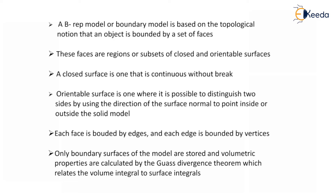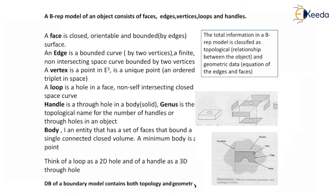Each face is bounded by edges, and each edge is bounded by vertices. Only boundary surfaces of the model are stored, and volumetric properties are calculated by the Gauss Divergence theorem, which relates the volume integral to the surface integral. A B-Rep model of an object consists of faces, edges, vertices, loops, and handles.